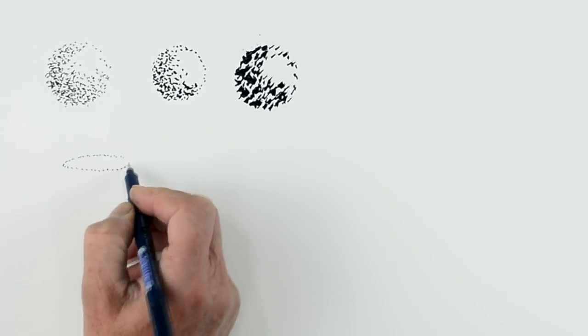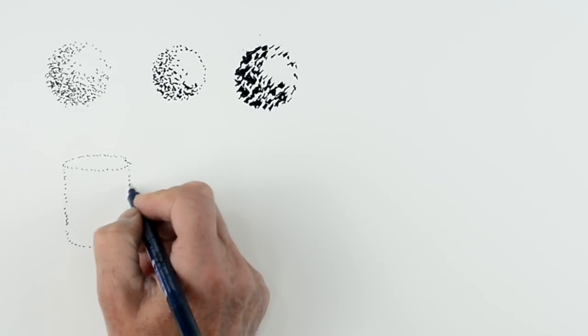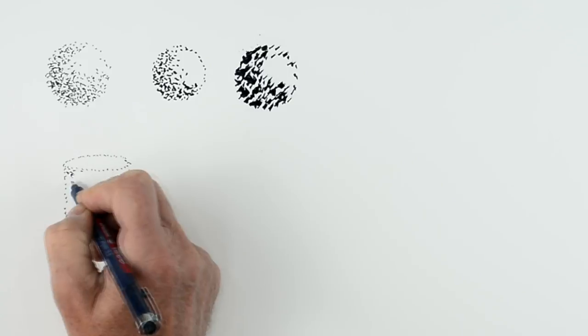Now, if you're drawing a simple shape, as we did before, this almost like a can shape, just go round with the dots again and then gradually build up the shape.